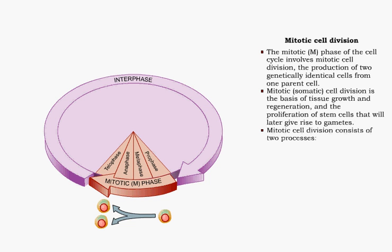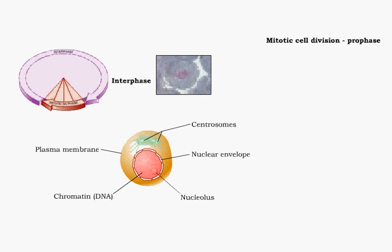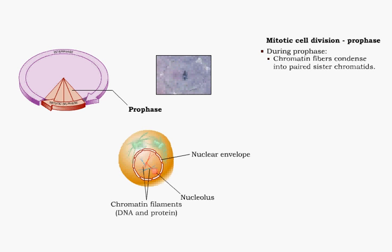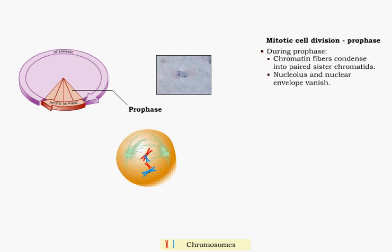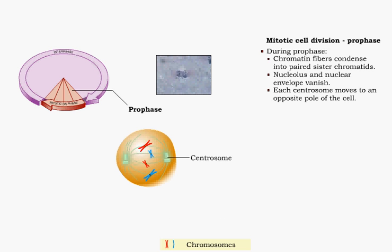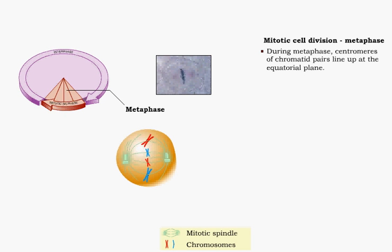Mitotic cell division consists of two processes: mitosis, which is nuclear division, and cytokinesis, which is cytoplasmic division. Mitosis involves the distribution of two sets of DNA molecules into separate nuclei and consists of four stages. During prophase, chromatin fibers condense into paired chromatids, the nucleolus and nuclear envelope vanish, each centrosome moves to an opposite pole of the cell, and the mitotic spindle appears. During metaphase, centromeres of chromatid pairs line up on the equatorial plane.